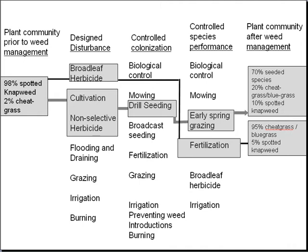In the controlled colonization category, the first treatment skipped that category. The second treatment did drill seeding of desirable plant species. In the controlled species performance category, the first treatment did fertilization and the second treatment did early spring grazing. The results of the first treatment were that 95% of the plant community were cheatgrass and bluegrass by the end, and 5% was spotted knapweed.